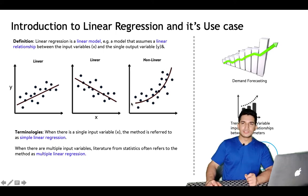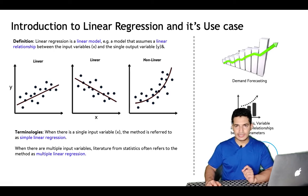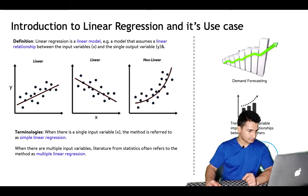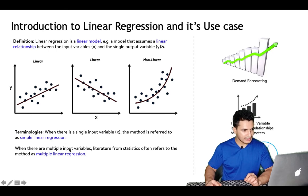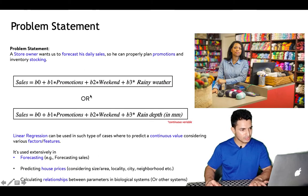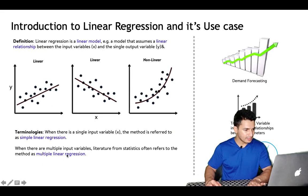As the name suggests, linear regression can only capture linear relationships. When there is a single input variable x, it's called simple linear regression. When there are more than one input variables, it's called multiple linear regression. For example, when there are three variables, it is multiple linear regression.